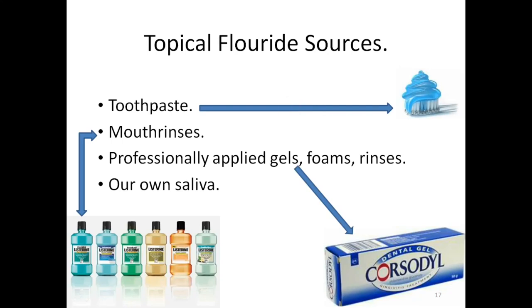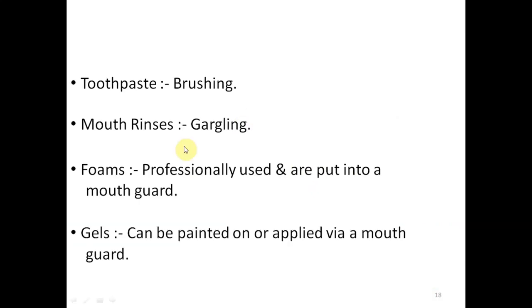The basic sources of topical fluorides are toothpaste, mouth rinses, professionally applied gels, foams, rinses, and even saliva contains fluoride. Toothpaste is applied during brushing, mouth rinses are used for gargling, foams can be applied by a professional, and gels can be painted on or applied using a mouth guard.